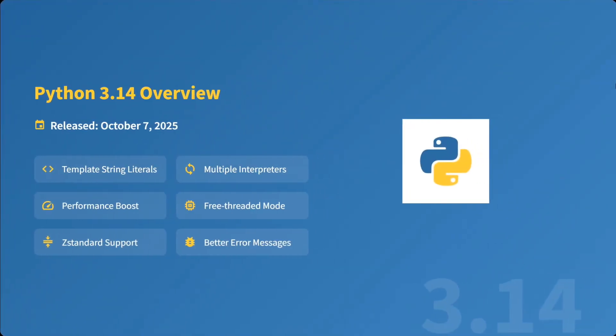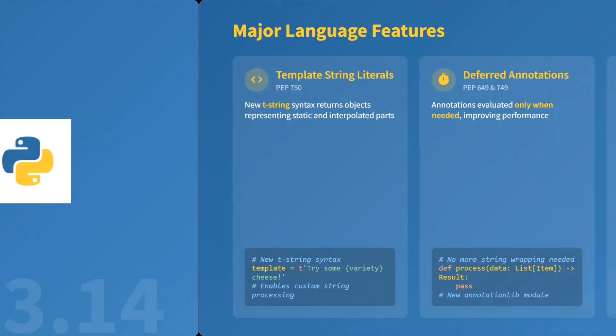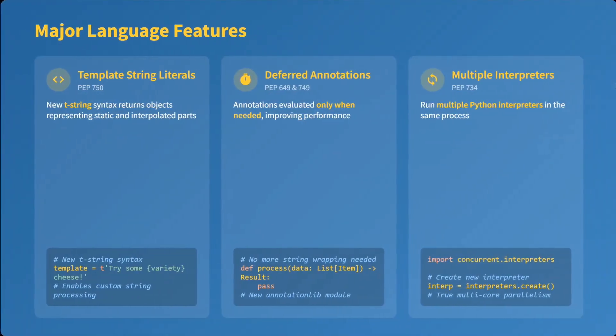Python 3.14 overview: it released on 7th of October. Template string literals have been introduced, multiple interpreters can now work in parallel, there is a performance boost, some changes in the libraries, and better error messages have come in.